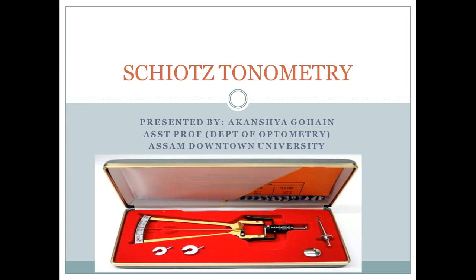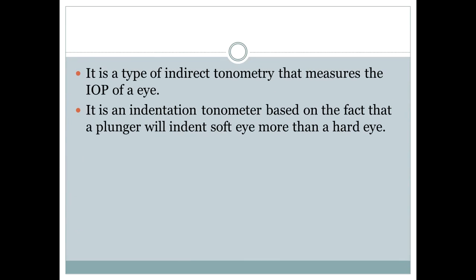Welcome to my presentation on Schiotz tonometer, which is a type of indentation tonometer that comes under the procedure of indirect tonometry. Using this tonometer, you can measure the IOP or intraocular pressure of your eye.